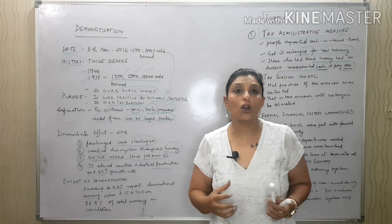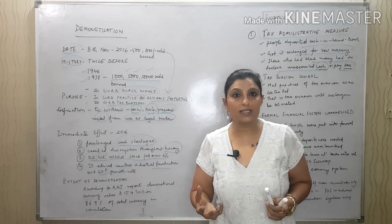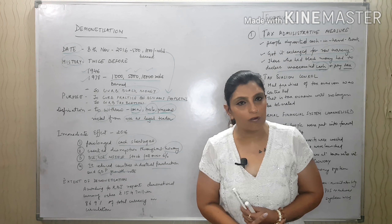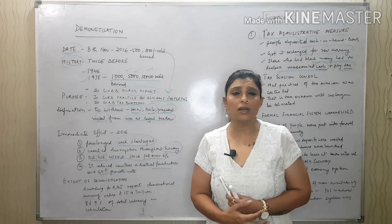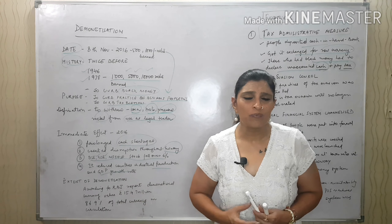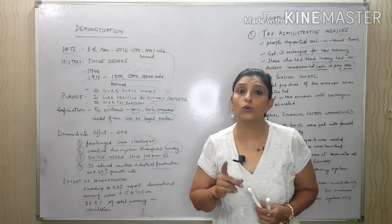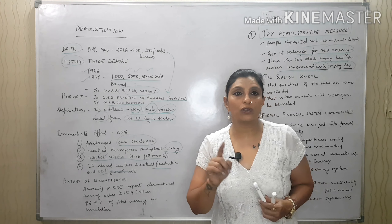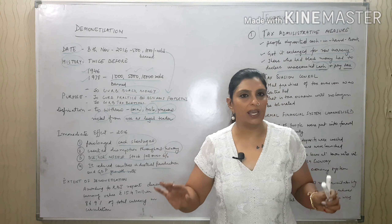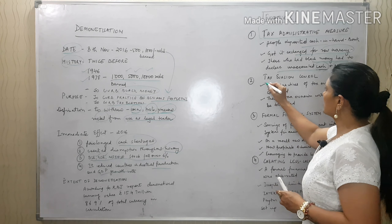Those who had black money had to declare cash and pay taxes. Media covered instances where people made large donations to religious places and hospitals. Some people opened accounts for their employees and deposited two lakh rupees per person. However, those who actually went to the bank, deposited their money, and paid tax with penalty were the ones who saved their money.